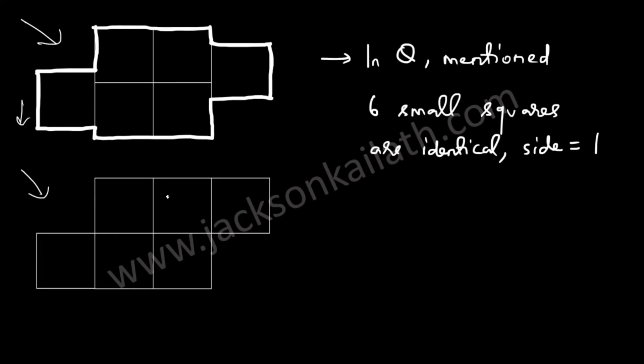You just need to count the number of sides. That is 1, 2, 3, 4, 5, 6, 7, 8, 9, 10, 11, 12. You have 12 units on the outside, and each side is of one unit. So the outer perimeter of this figure is 12 into 1, which is equal to 12 units.